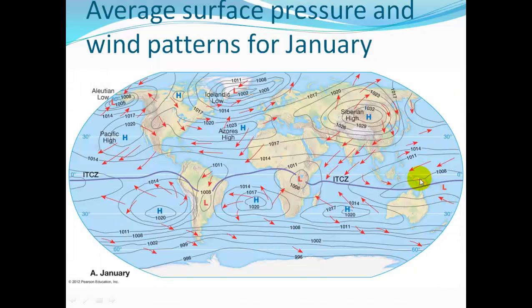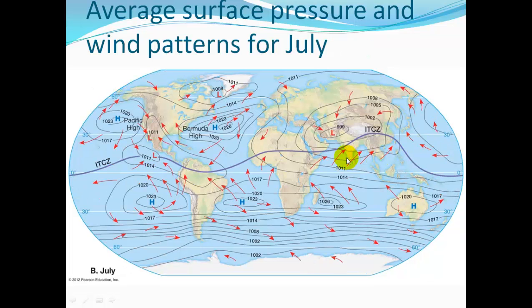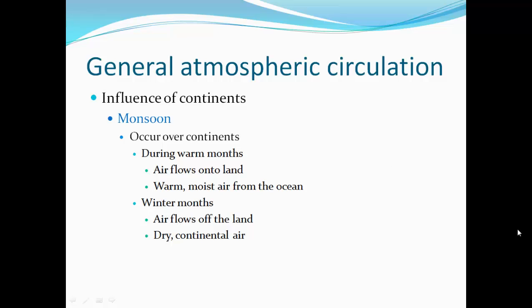Here's a closer look: in winter, dry air comes off the continent, so there's no rain — and in Florida we don't have as much rain. Come summer, warm moist air comes up off the ocean, and as it cools over the land it drops rainfall. A monsoon occurs over continents during warm months when warm, moist air flows onto land from the ocean. In winter months, dry continental air flows off the land.